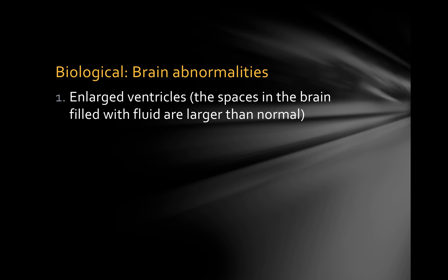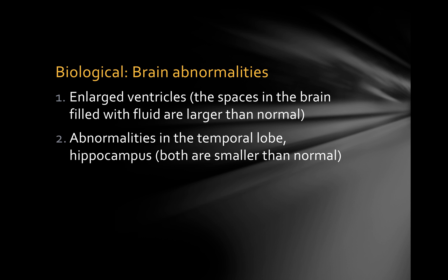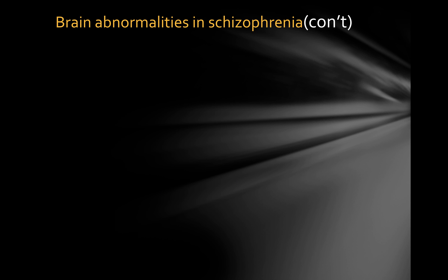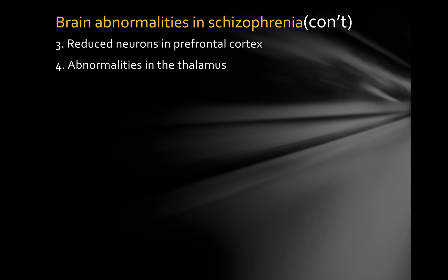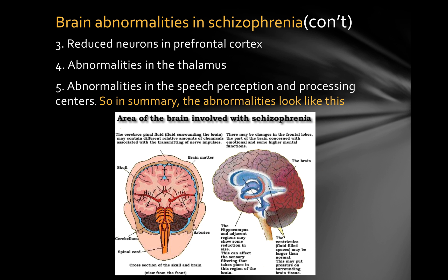There are some brain abnormalities in long-term schizophrenia. Enlarged ventricles are often found — ventricles are the spaces in the brain typically filled with cerebrospinal fluid, and these are larger than normal in schizophrenics. There are also abnormalities in the temporal lobe and hippocampus, which are smaller in schizophrenics than in non-schizophrenics. A diagram summarizes these findings, showing those larger-than-normal ventricles that might be putting pressure on brain tissue.